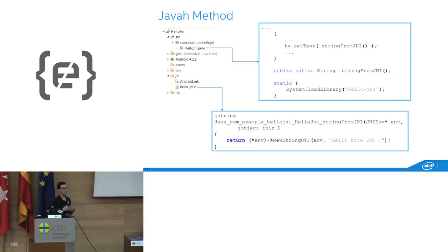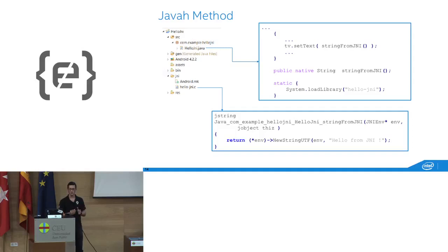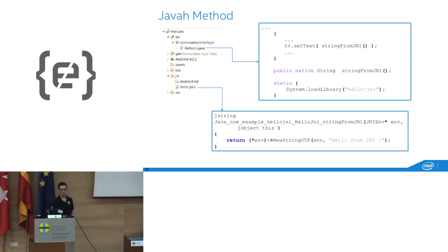ndk-build is the central build script from the NDK. You use it to compile your C and C++ sources into .so files, then integrate these .so files into your application project. From your Java code, you load these .so files to use them. Inside these .so files, you'll have the implementation of the methods you want to be native.